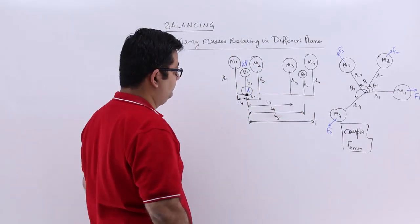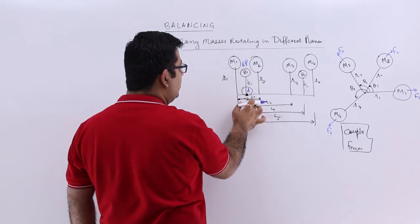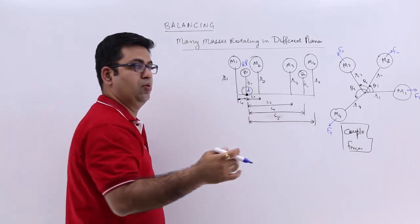So the couple would be force into L1, force into L2, force into L3 and so on.